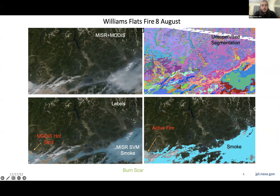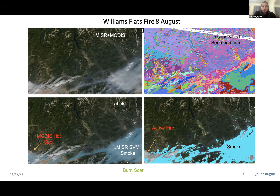As an example — we'll come back to this in the results — this is a scene over the Williams Flat Fire in 2019 in Washington. The imagery comes from two instruments aboard the same satellite: the Terra satellite, the MISR and MODIS instruments. They have varying spectral resolution. MODIS is a single camera with 38 bands; MISR is nine cameras pointing at different angles, each with four spectral bands. We combine all that information and provide this unsupervised segmentation. You can then apply context to a subset of those clusters, and what you're left with is the fire and smoke identification shown in the bottom right.